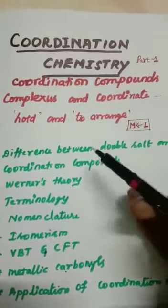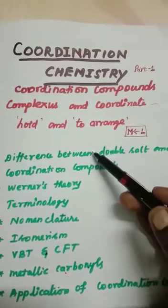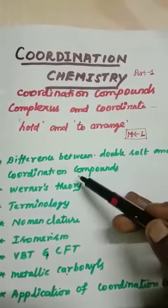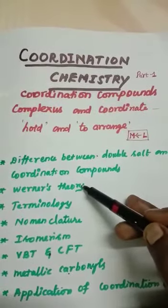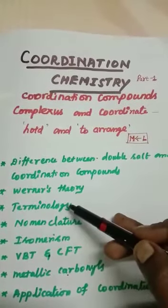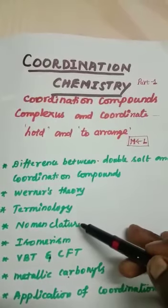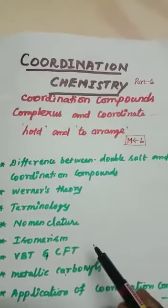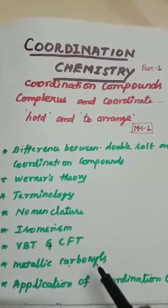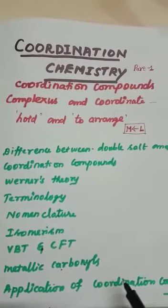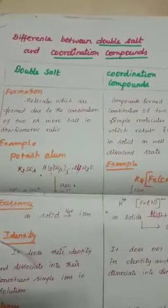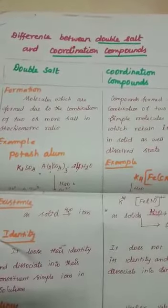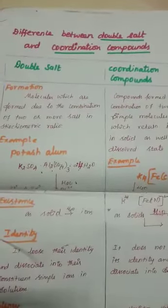In this chapter, we are going to discuss the difference between coordination compound and double salt, Werner's theory, important terminologies, nomenclature of coordination compounds, isomerism, VBT and CFT theory, metallic carbonyls, and applications of coordination compounds. First, we will see the difference between double salt and coordination compound.